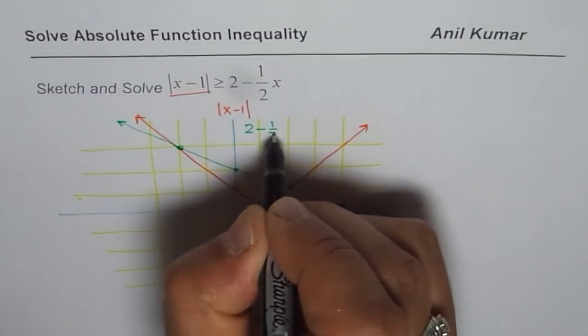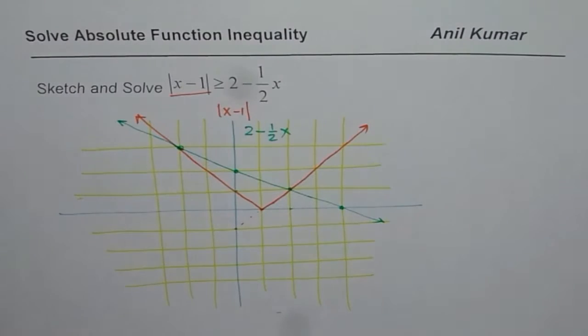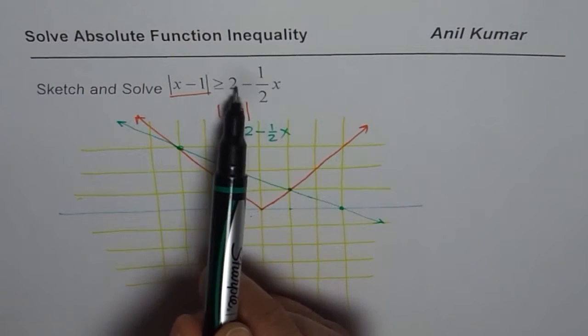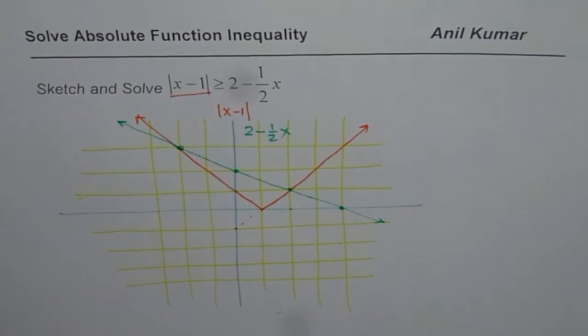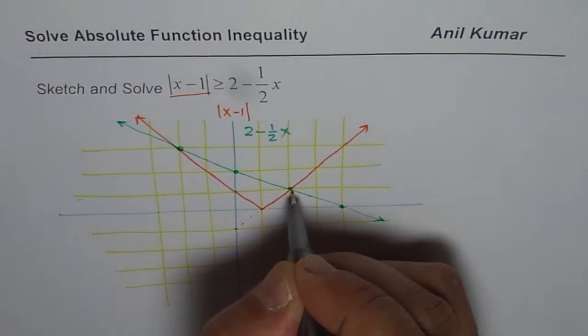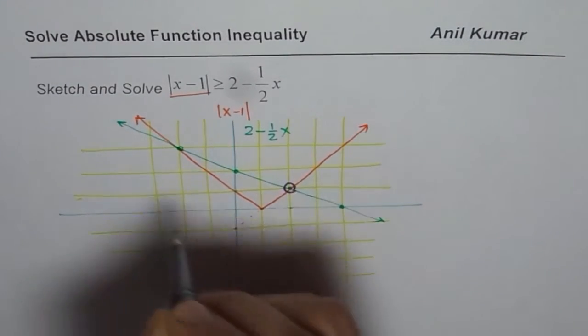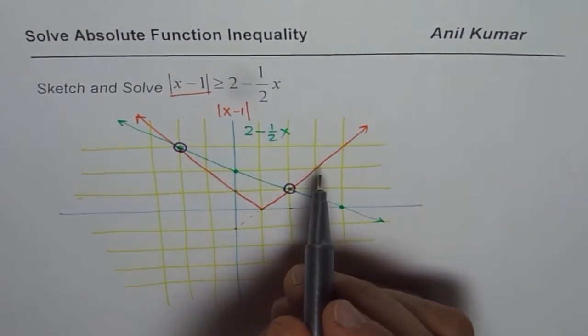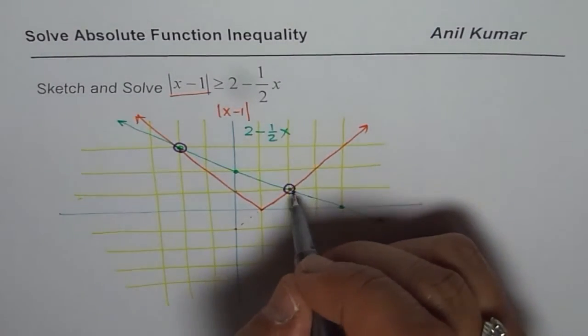Now when I'm saying that this absolute function is greater than equal to 2 minus half x, what does it mean? It means at these points we know it is equal. At these points both are equal. Now beyond these points what we see is absolute function is greater than.